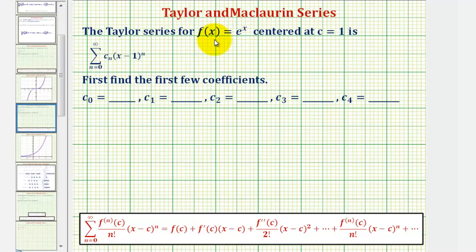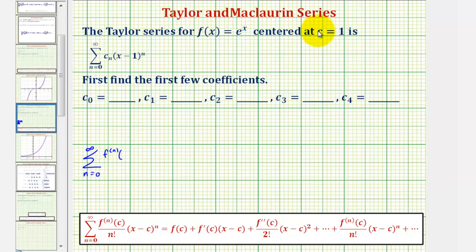So for our function f of x, the Taylor series would be equal to the summation from n equals zero to infinity of the nth derivative of f, evaluated at positive one, divided by n factorial times the quantity x minus one, raised to the nth.